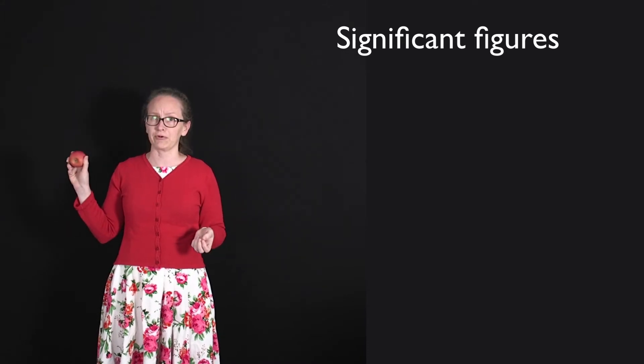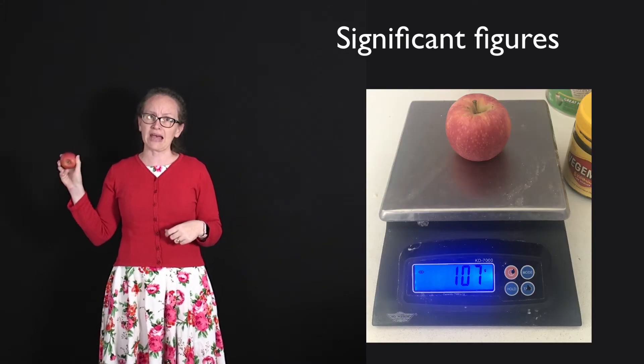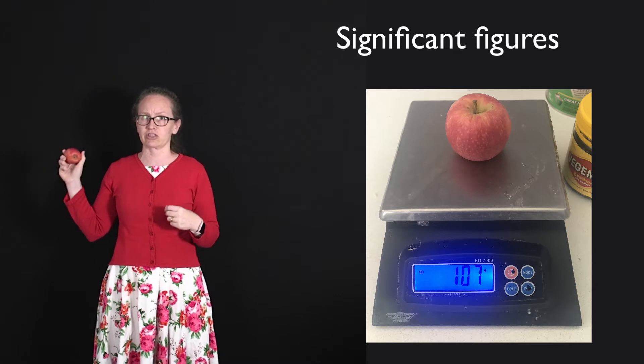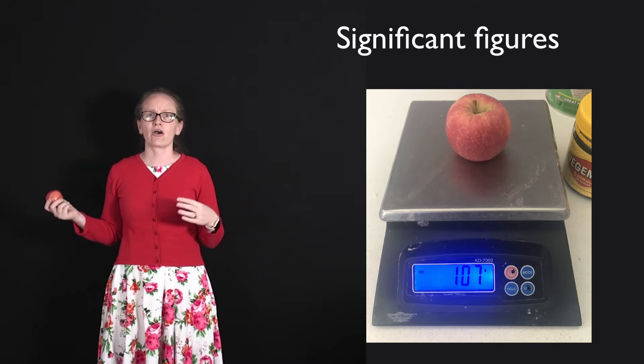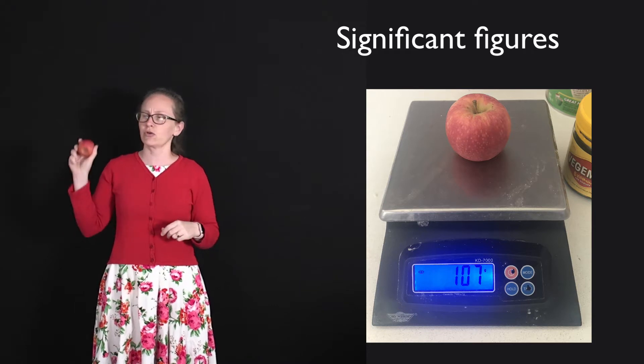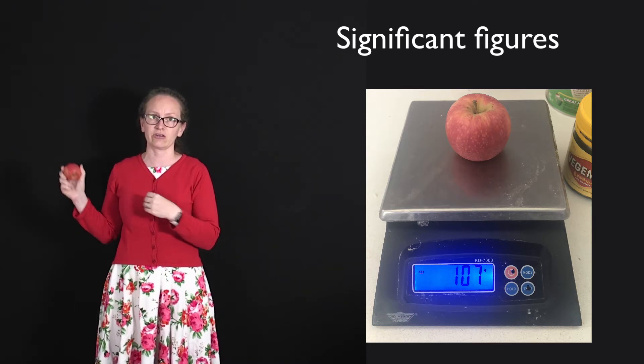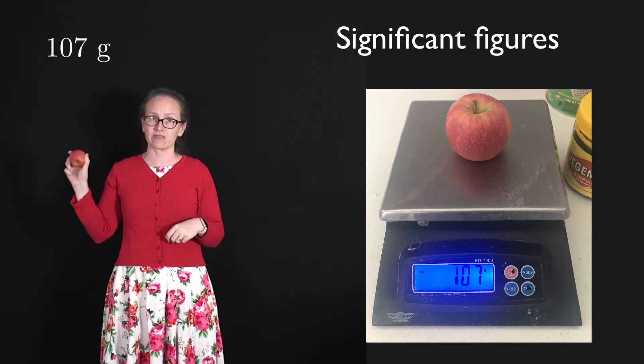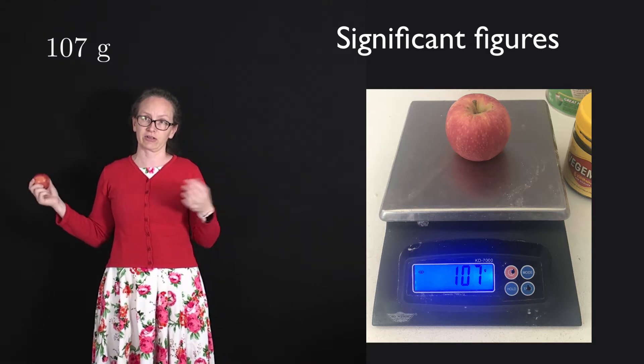So for example, consider this apple. I measure the mass of this apple on my scales at home. My scales at home can measure mass to the nearest one gram. So when I place this apple on those scales, it told me that the mass of the apple was 107 grams.